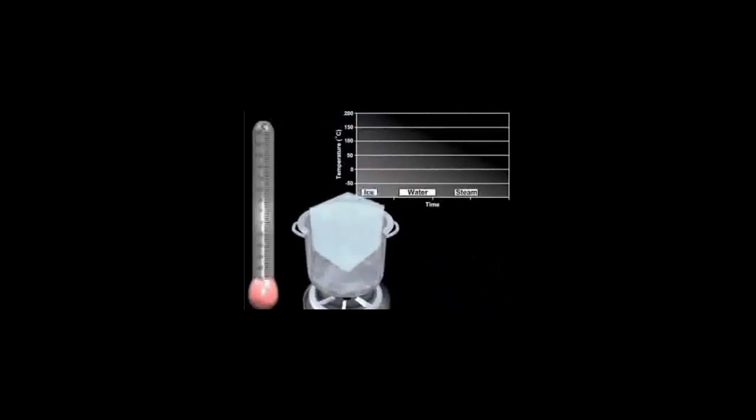We have a block of ice initially at minus 50 degrees Celsius. We add heat to the ice and the temperature rises. When the ice reaches zero degrees Celsius, it is at its melting point. If we continue to add heat,